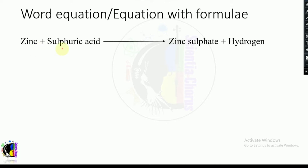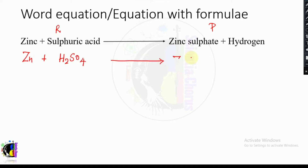Let us consider a word equation: zinc plus sulfuric acid gives zinc sulfate plus hydrogen. This is a word equation with reactants and products. Now let us write it using symbols and formulas: Zn + H₂SO₄ → ZnSO₄ + H₂. This is the equation with chemical formulas.